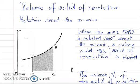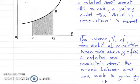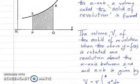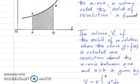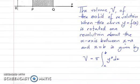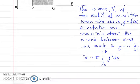Volume of solid of revolution — rotation about the x-axis. When the area PQRS is rotated 360 degrees about the x-axis, a volume called the solid of revolution is formed. The volume V, when the curve y = f(x) is rotated one revolution about the x-axis between x = a and x = b, is given by the formula V = π times the integral from a to b of y² dx.